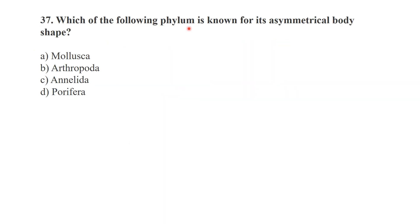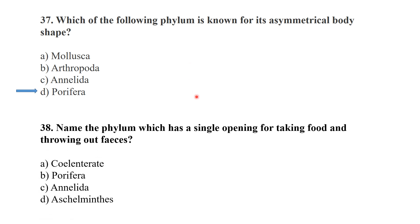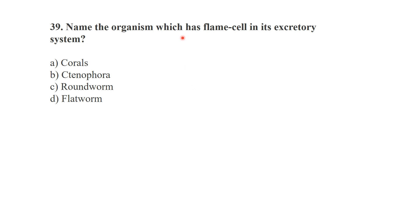Which phylum is known for its asymmetric body shape? Phylum Porifera is known for its asymmetric body shape. Which phylum has a single opening for ingesting food and expelling feces? That is Platyhelminthes. The organism that has flame cells is the flatworm.